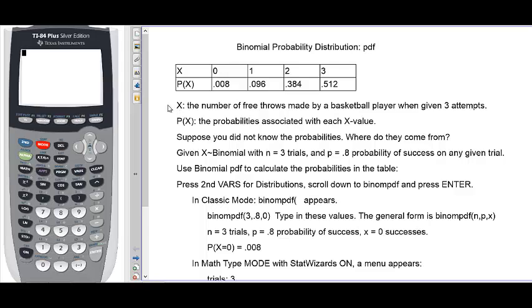In this example, x represents the number of free throws made by a basketball player when given three attempts. And p is the probability associated with each of these outcomes. Let's suppose for just a minute that we don't know what these probabilities are. Where do they come from? Suppose all you're given is that x is a binomial random variable with n equals three trials and probability of success on any given trial is 0.8.